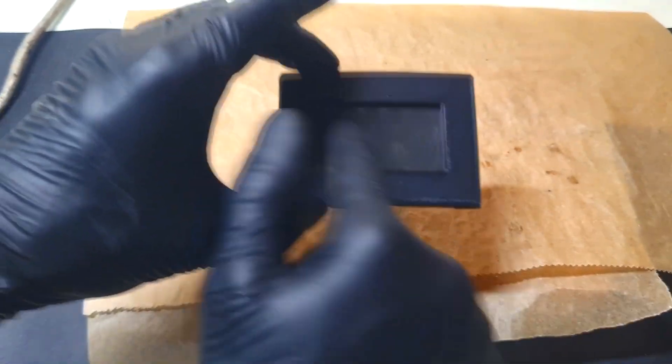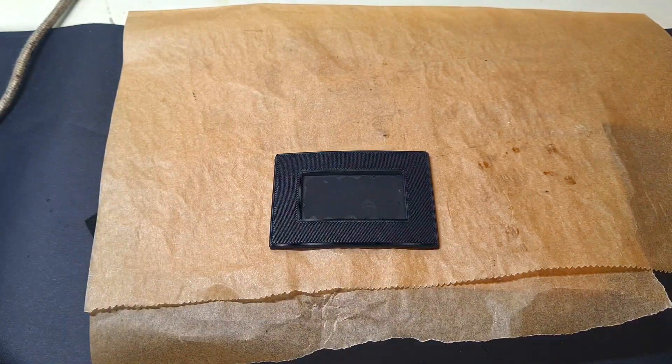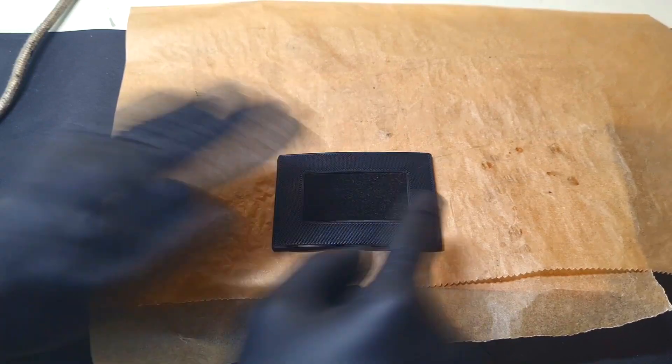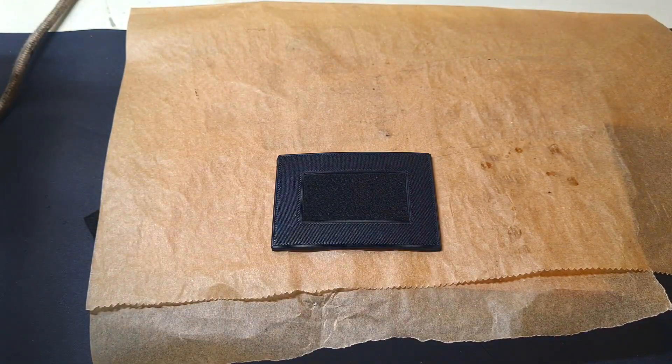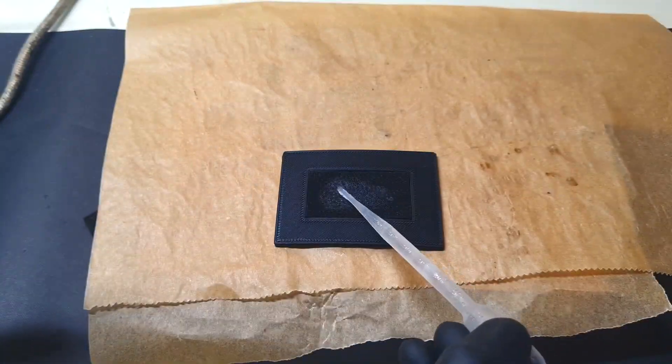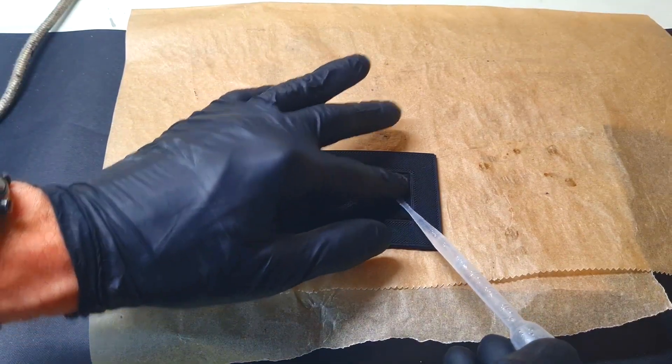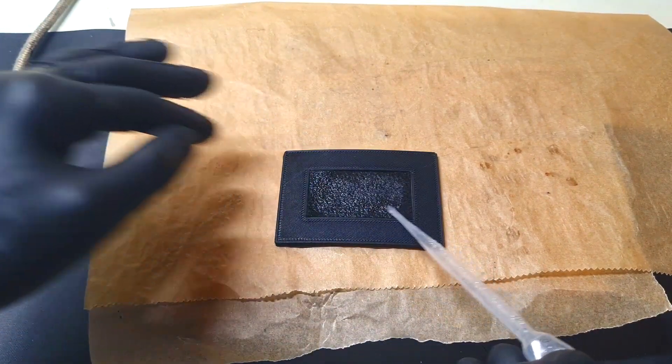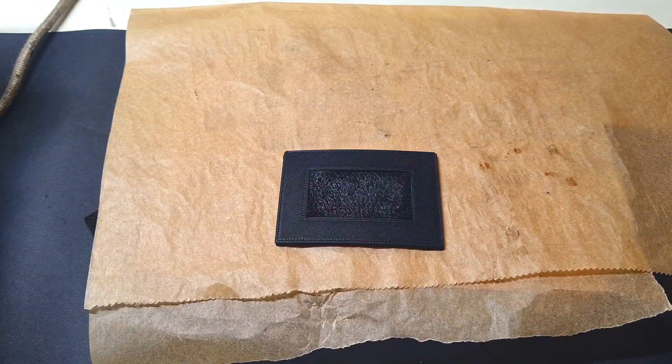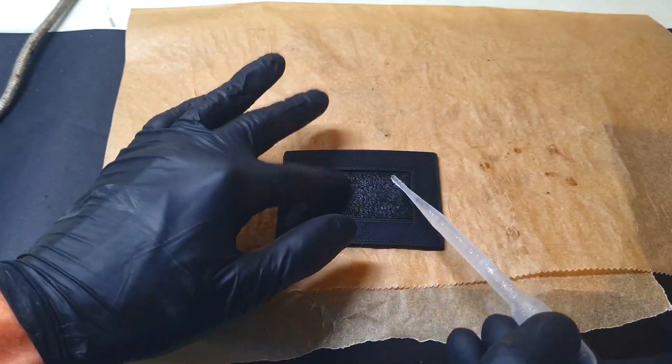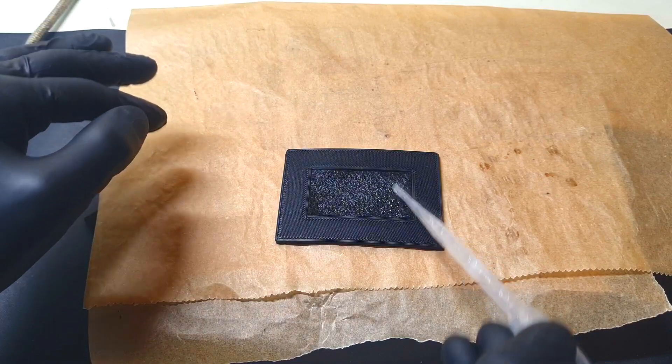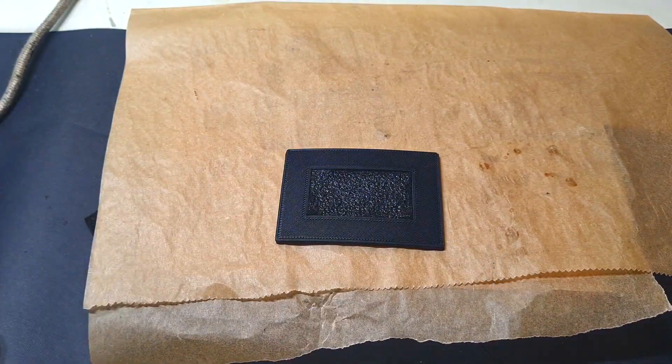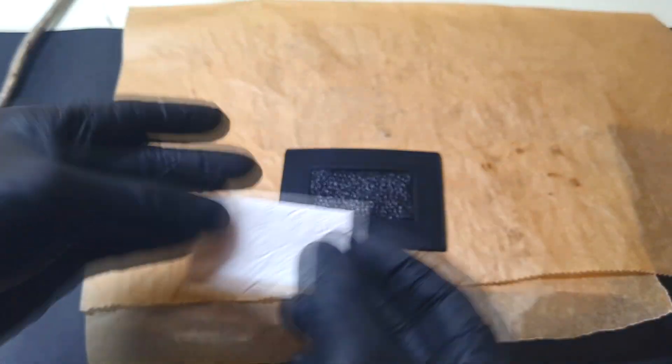Now this area over here I will fill with this carbon felt. I will add the electrolyte and the separator.